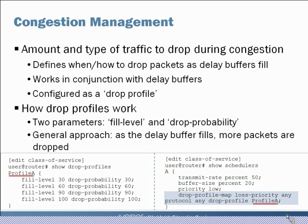Drop profiles make use of two parameters: fill level — how full the queues and buffers are getting — and drop probability — how likely you are to drop traffic at each given level. In the example in the bottom left, we have a drop profile configured with multiple levels: when the fill level reaches 30%, the drop probability is about 30%; at 60% fill, drop probability is 60%; at 90% fill, drop probability is 90%; and at 100% full, everything is dropped. This staged approach preemptively throttles back TCP windowing to reduce congestion.